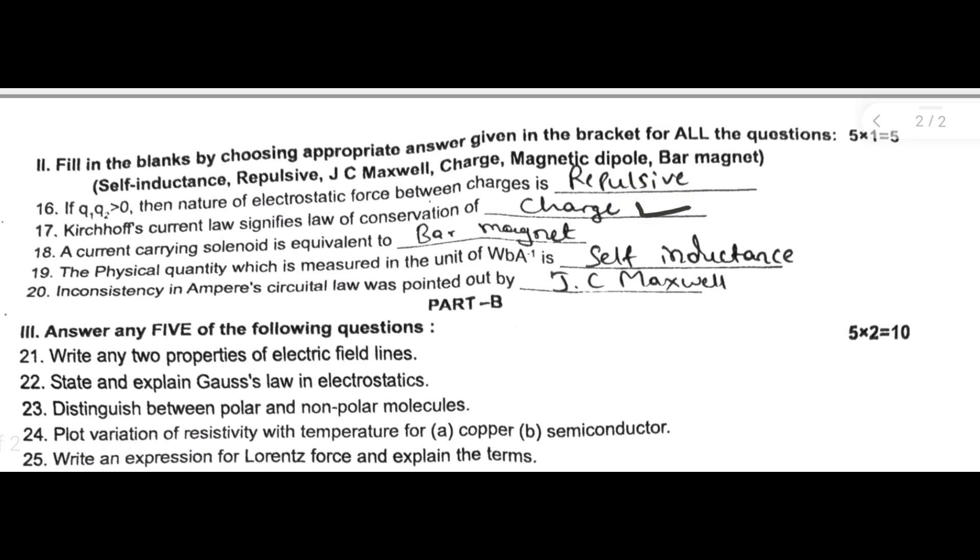Next one: a current carrying solenoid is equivalent to bar magnet. Next one: the physical quantity which is measured in the unit of Weber per ampere, that is self inductance. I think Weber per ampere.